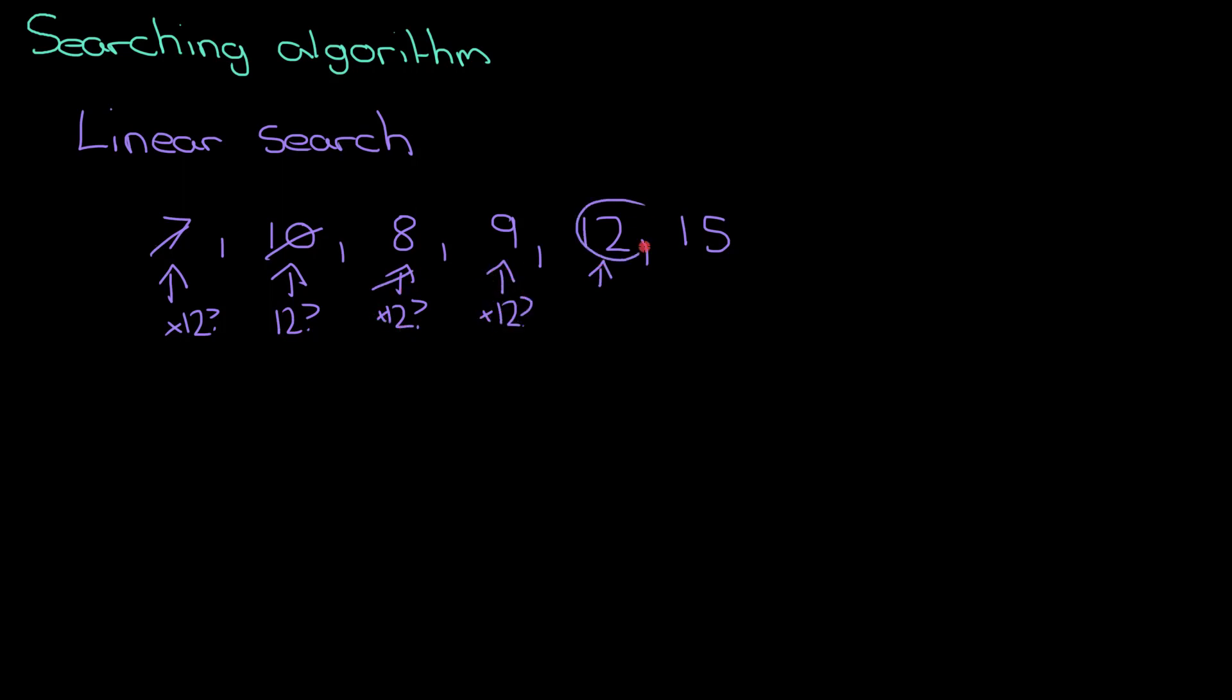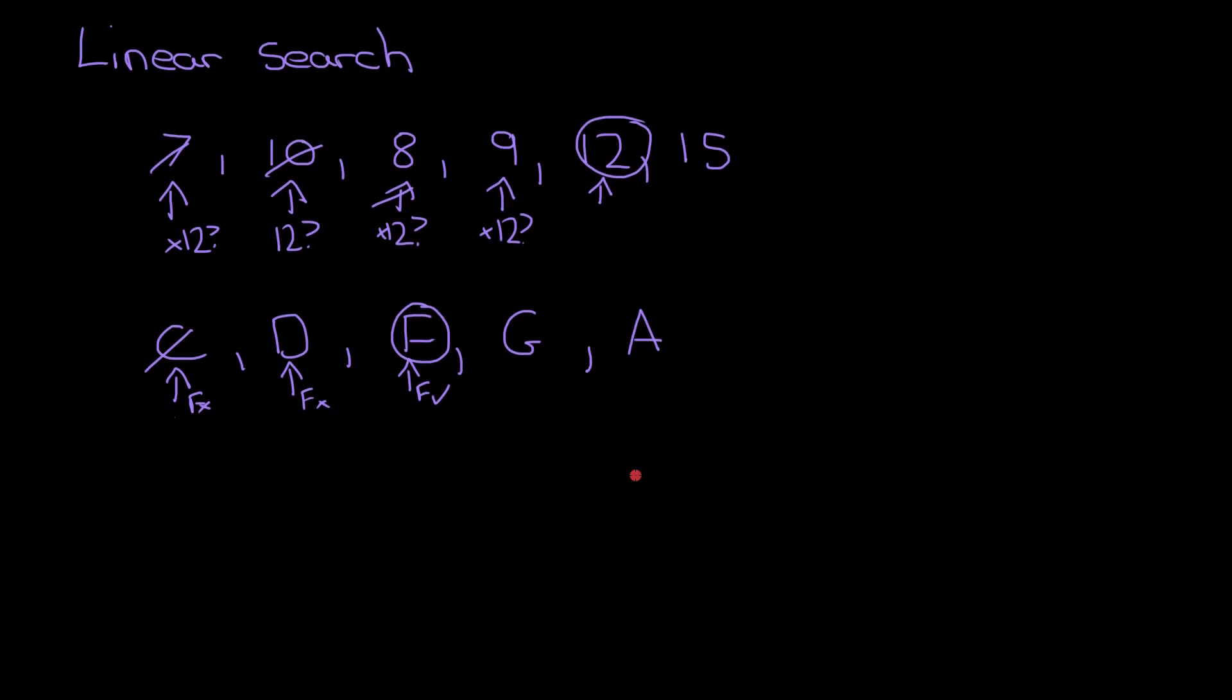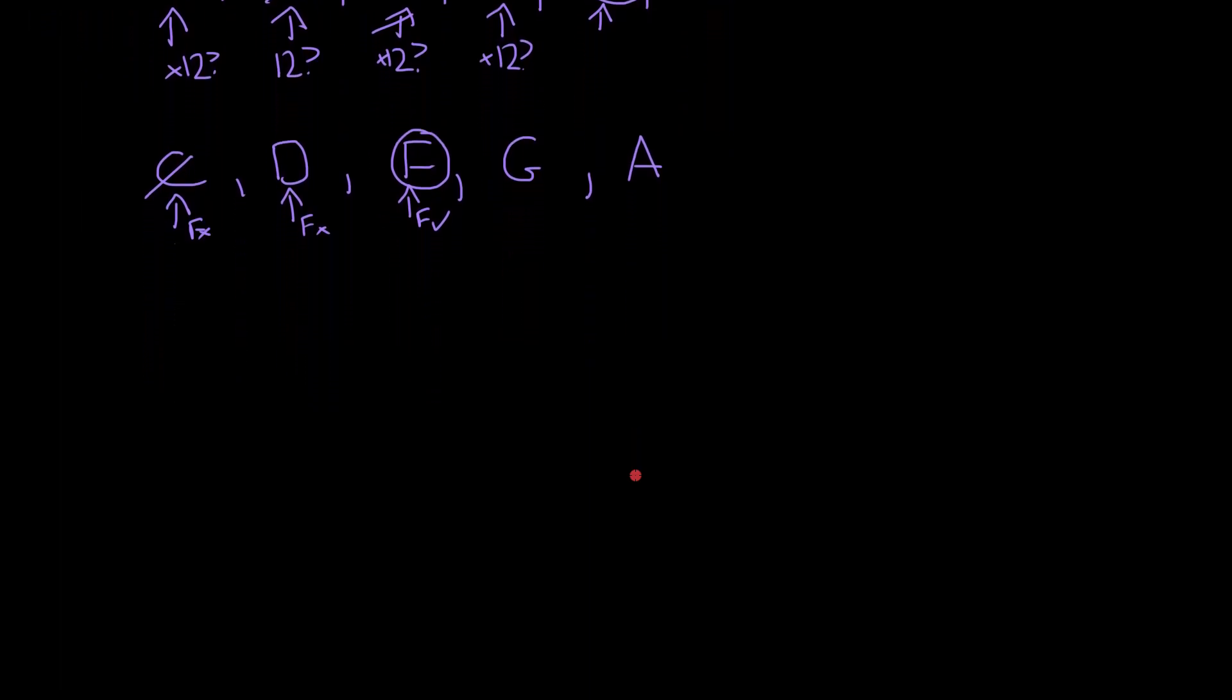This works on letters as well as numbers, or anything that you can put into any sort of order. If I'm looking for the letter F, I go through exactly the same process. Is this F? No, so I go to the next one and so on. That's fairly straightforward, the easiest searching algorithm we have. A little bit more complicated but much more efficient is something called a binary search.